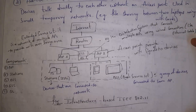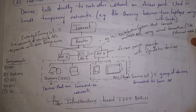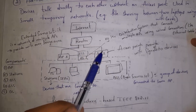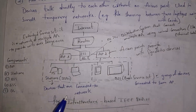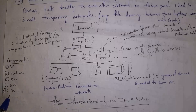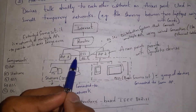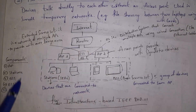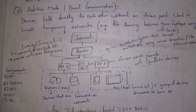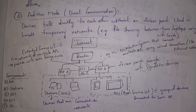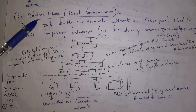ESS (Extended Service Set) is a network that contains multiple access points, which allows it to cover a large area. DS stands for Distribution System — if we establish a connection between two access points by cable, we call that network a distribution system. This is all about the infrastructure-based architecture of IEEE 802.11 standard.